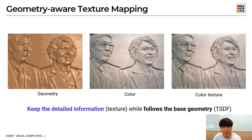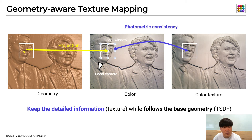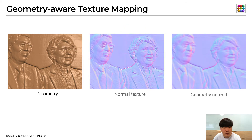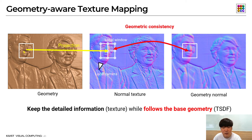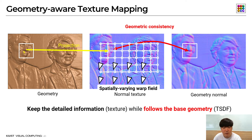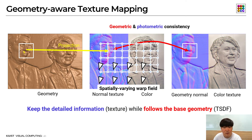First, we use the color information to preserve texture detail. The 3D point of TSDF geometry is projected onto a 2D color image. Based on a local window centered on this point, the warp function is optimized to minimize the photometric difference between the color texture and the local window. At the same time, we use the normal information to ensure that the warp function does not lose its registration with the geometry. We project the 3D point of the TSDF geometry into a normals texture map, then estimate the warp function that minimizes the geometric differences between the local window created around the points and the TSDF normals. By repeating this for each grid, we finally estimate the spatially varying warp field that minimizes the difference between the input image and the texture while reducing differences between the texture and the geometry.